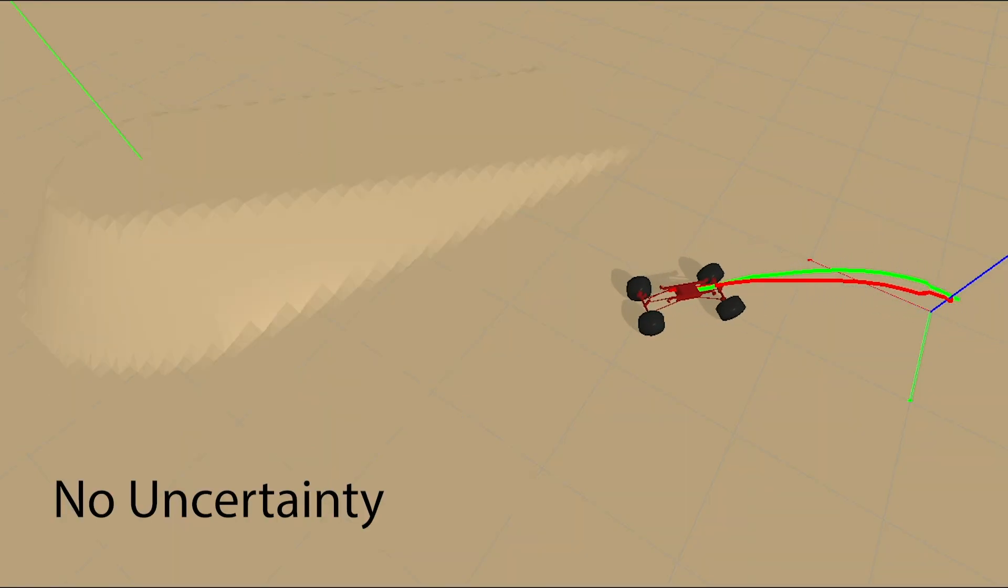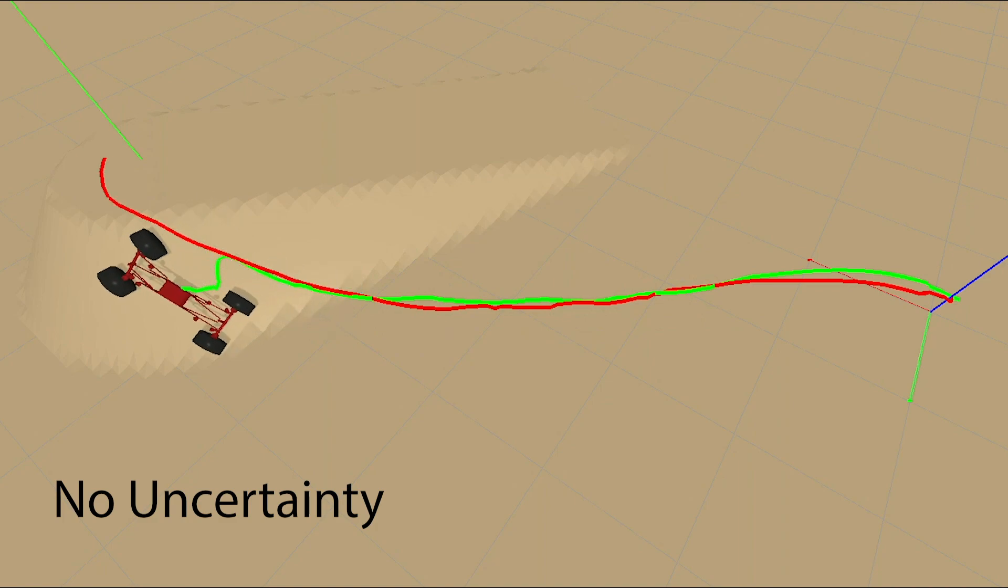When uncertainty is not considered, the trajectory optimizer exploits modeling errors and finds impossible trajectories.